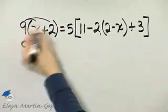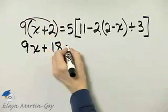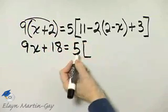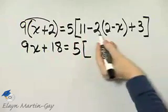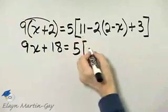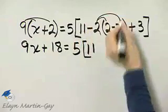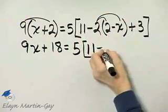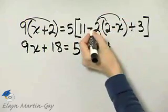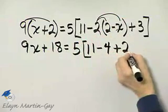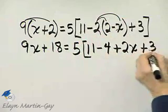That's 9x plus 9 times 2 is 18, is equal to 5 bracket. Now be careful, I've got to work within the innermost set. So that's 11, I'm multiplying, minus 4 plus 2x plus 3.